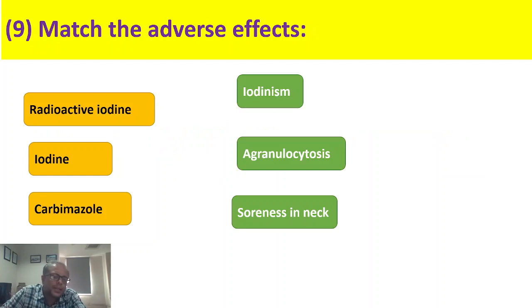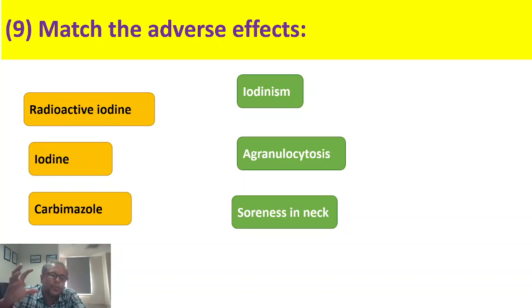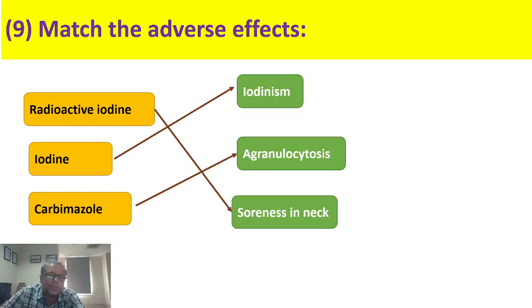Match the adverse effects of thyroid drugs: radioactive iodine, iodine, and carbimazole. The options are iodinism, agranulocytosis, and soreness in the neck. When radioactive iodine is given, being a radioactive material, there are chances of focal soreness in the neck. Iodine leads to iodinism. Carbimazole is generally a safe drug, but rarely it leads to agranulocytosis.